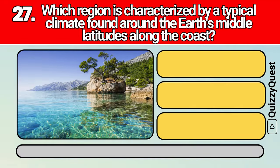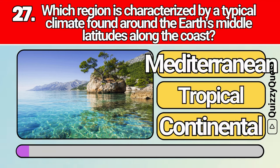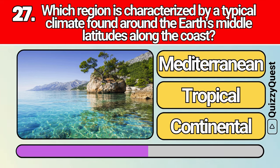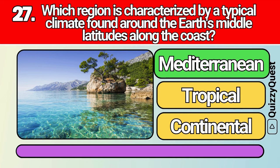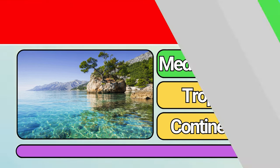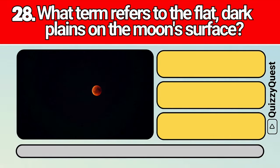What region is characterized by a typical climate found around the Earth's middle latitudes along the coast? What term refers to the flat, dark planes on the Moon's surface?